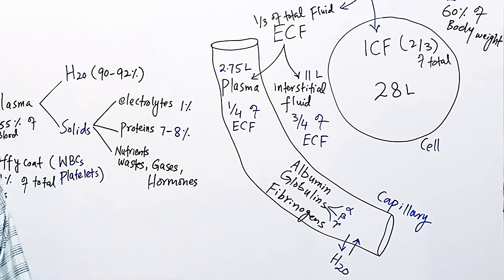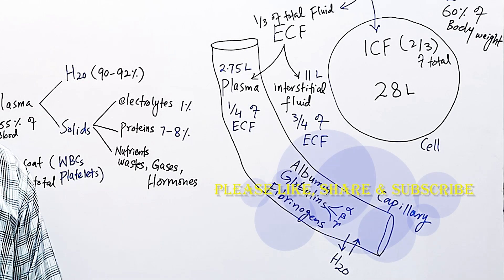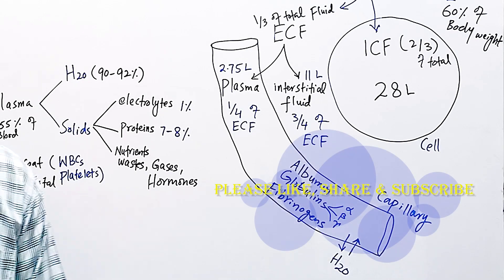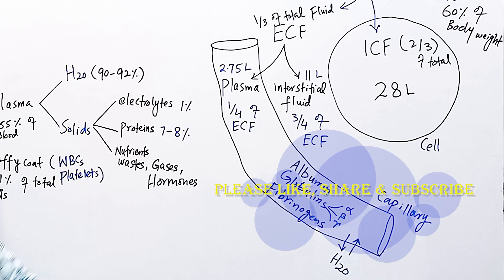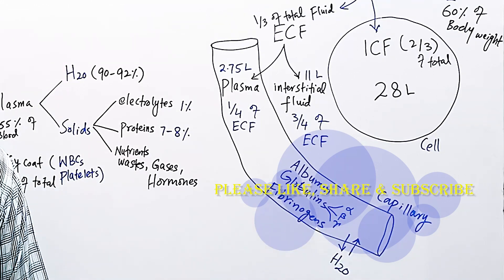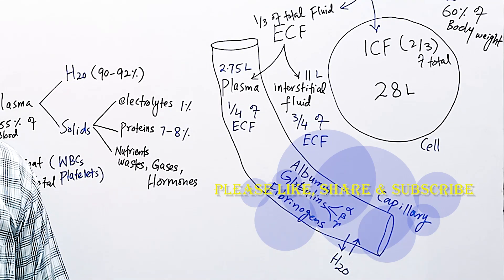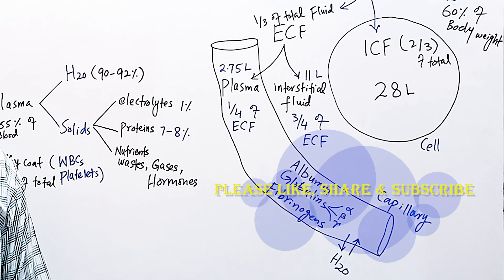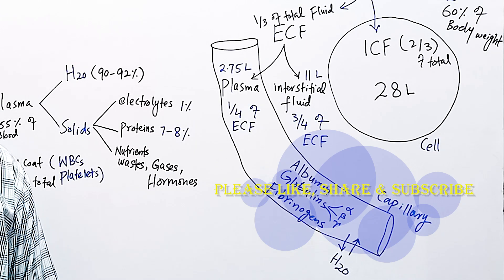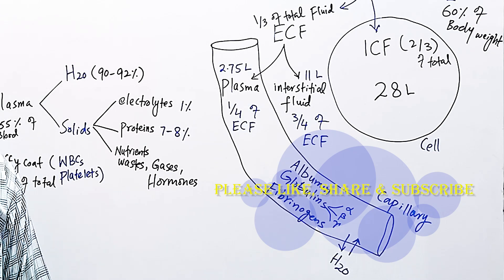Many clotting factors like clotting factor number 5, 7, 8, 9, 10, 11, 12, and 13 belong to either alpha or beta globulins. These are important for blood clotting. Out of all these factors, factor number 2, 7, 9, and 10 are vitamin K dependent factors which are synthesized in liver.